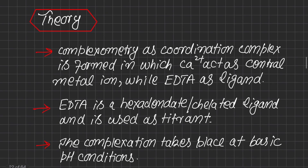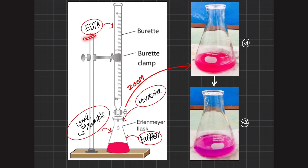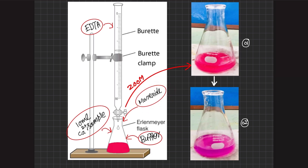In the experimental setup, EDTA is the titrant so we take it in the burette, while in the flask we take 10 mL of the calcium ion sample solution. We add buffer to make its pH basic and add the indicator muroxide. The original color of muroxide is purple, but when added to the sample solution it forms a complex with calcium and turns rose red.